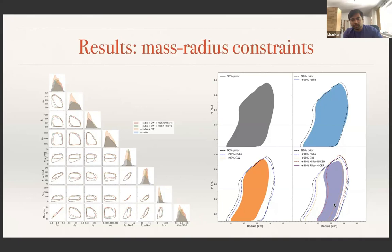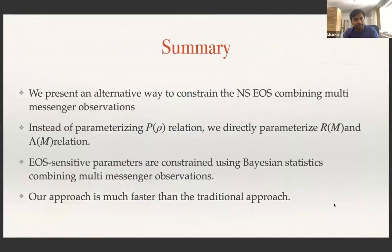To summarize: we present an alternative way to constrain the neutron star equation of state by combining multi-messenger observations. The idea is that instead of parameterizing the equation of state directly, we parameterize the macroscopic properties of the neutron star—such as radius and tidal deformability as a function of mass. We then constrain these EOS-insensitive parameters using Bayesian statistics combining multiple observations. The main advantage of our approach is that it is a much faster process than the traditional approach. Thank you very much.